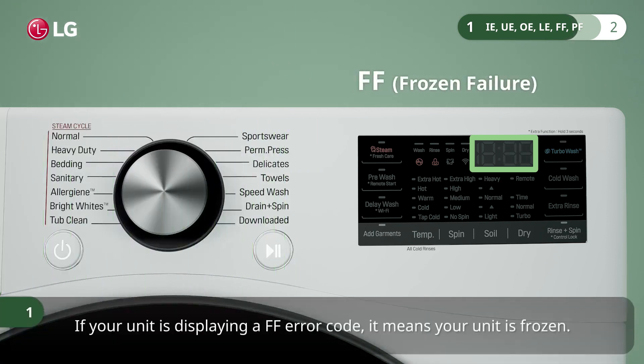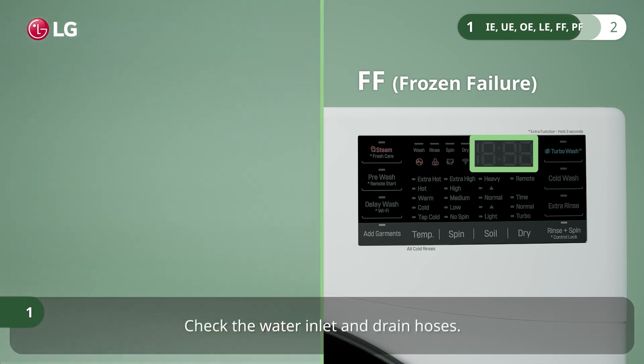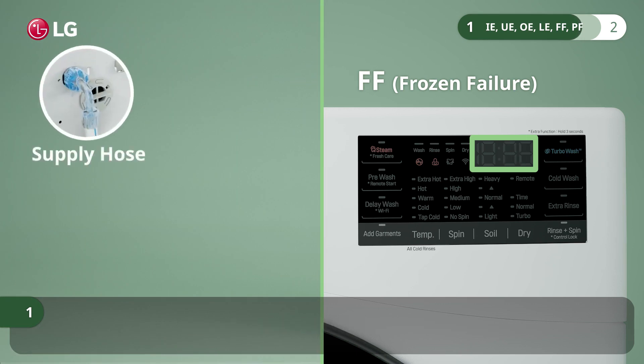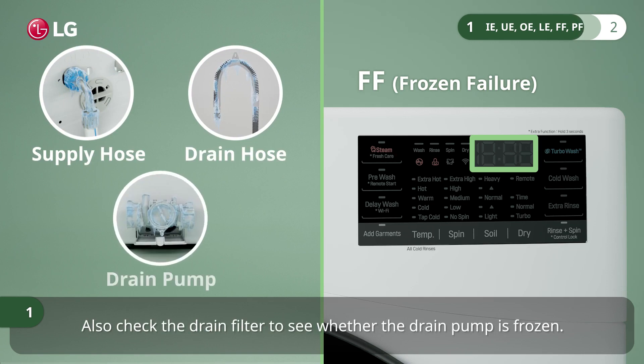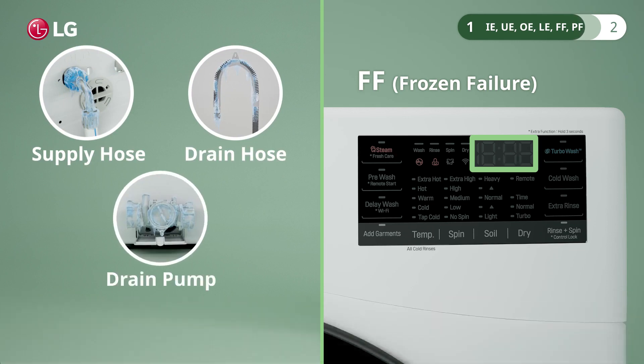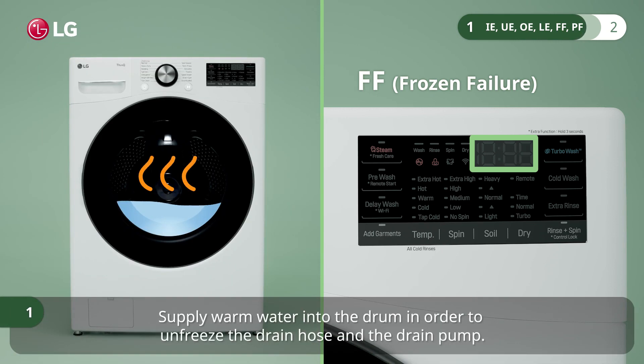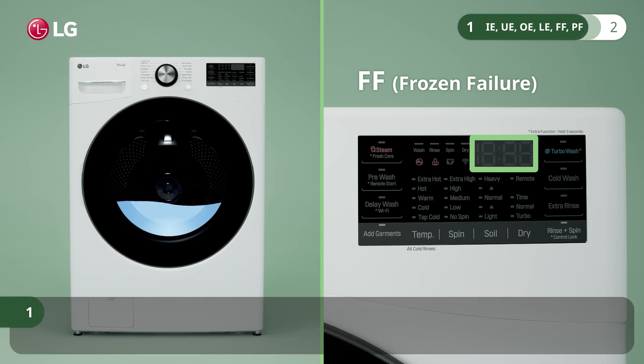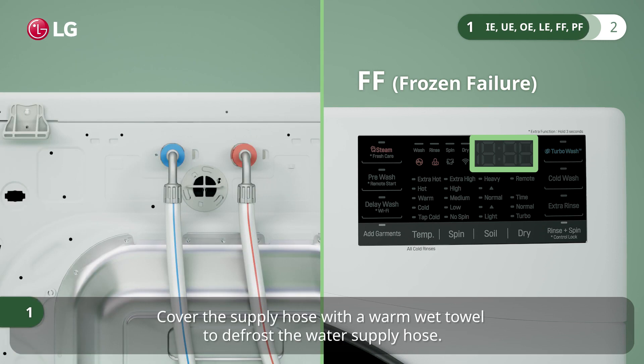If your unit is displaying an FF error code, it means your unit is frozen. Check the water inlet and drain hoses, and also check the drain filter to see whether the drain pump is frozen. Supply warm water into the drum to unfreeze the drain hose and pump. Cover the supply hose with a warm wet towel to defrost the water supply hose.